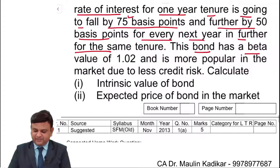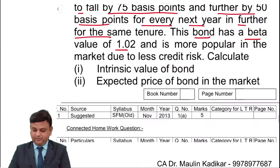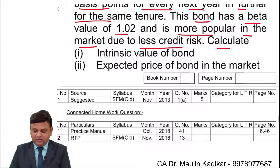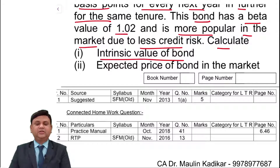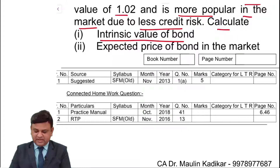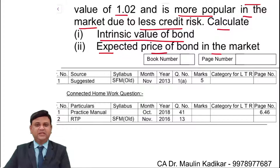This bond has a beta value of 1.02 and is more popular in the market due to less credit risk. We need to calculate: first, the intrinsic value of the bond — the maximum price an investor is ready to pay, i.e., P0; and second, the expected price of the bond in the market.